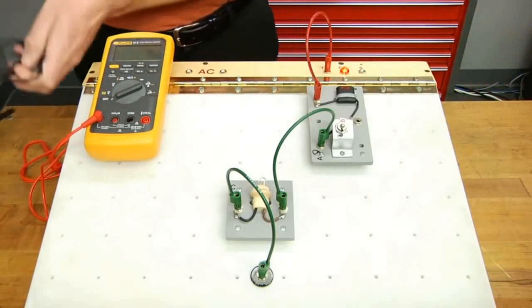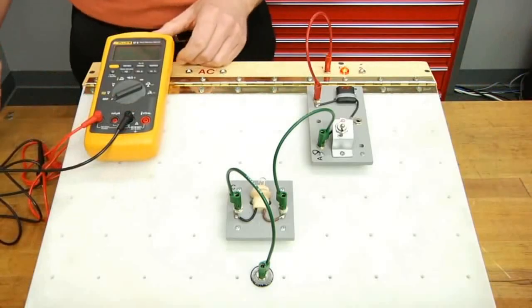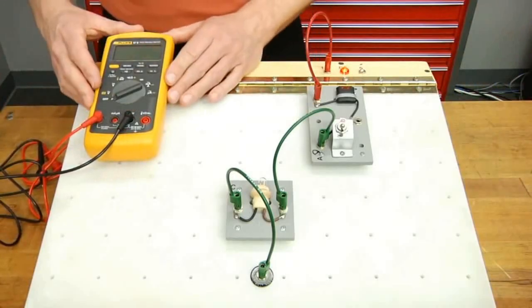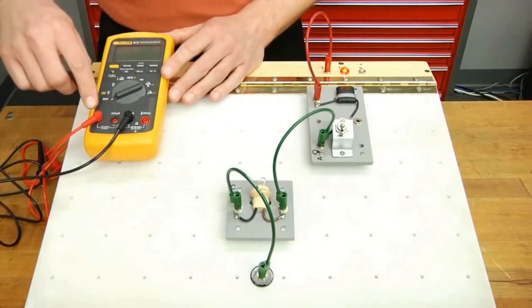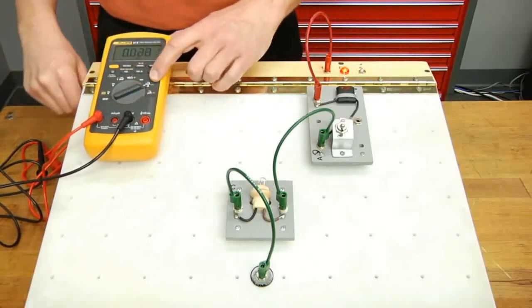Next, we'll take our black lead and insert it into the common or ground terminal. Next, we need to turn our meter on. Since we're going to start at our high level, we want to turn our rotary knob to the milliamp amp setting. That will read our higher scale.